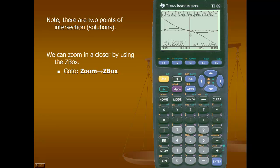In order to make my box, I'll start with the bottom left-most corner of my box and press enter. I'll then go up and over to the left, making sure that both points of intersection are in our box. Next I'll hit enter.